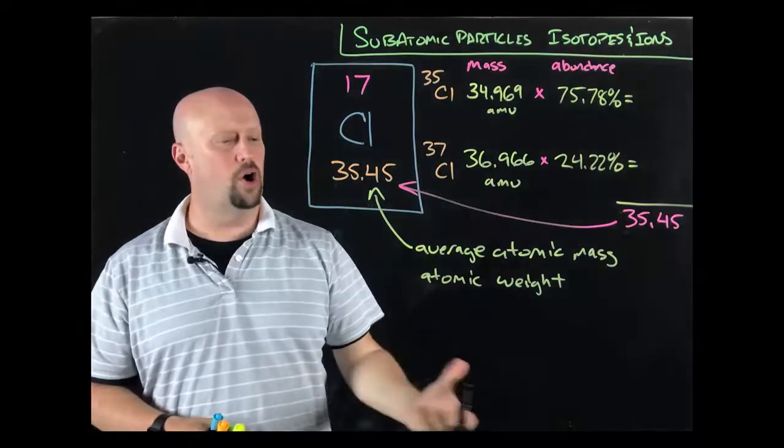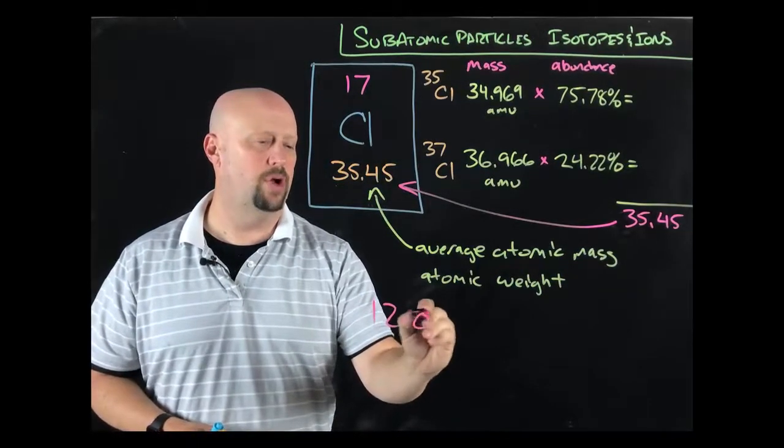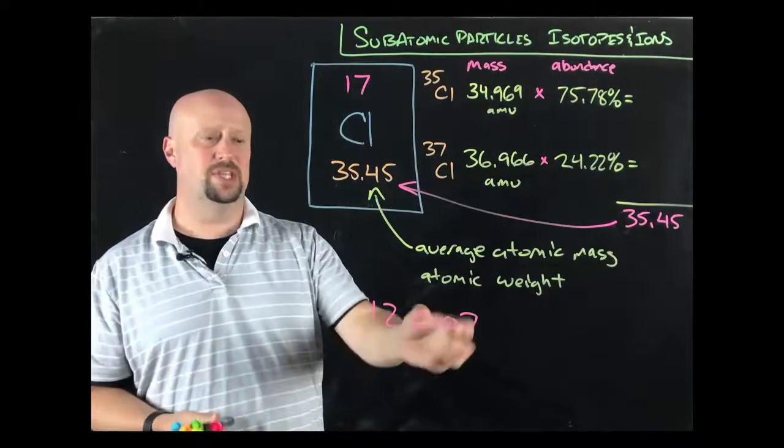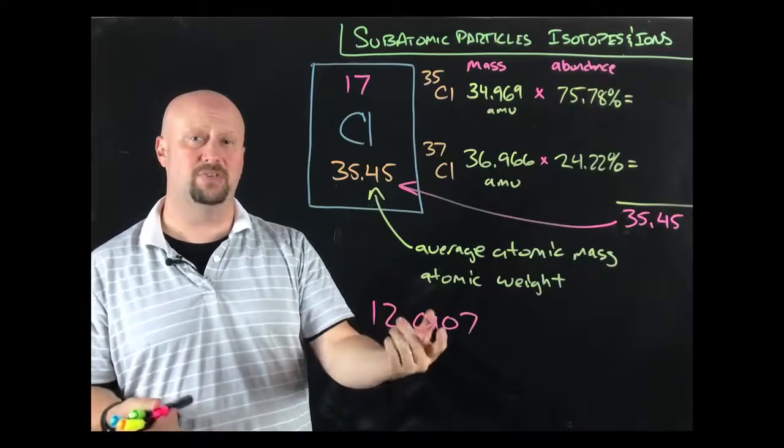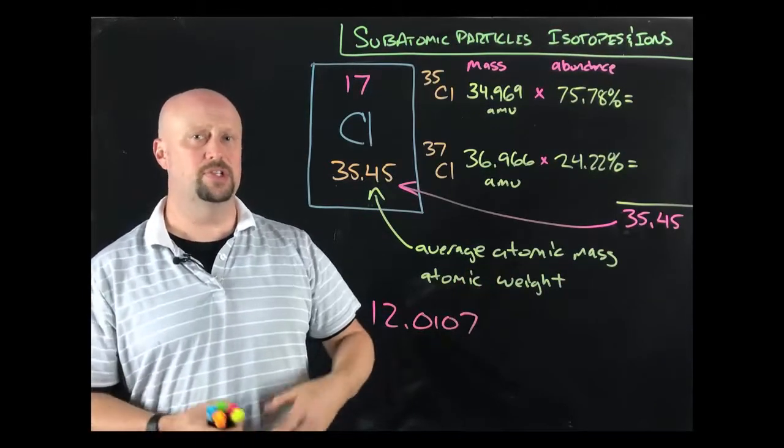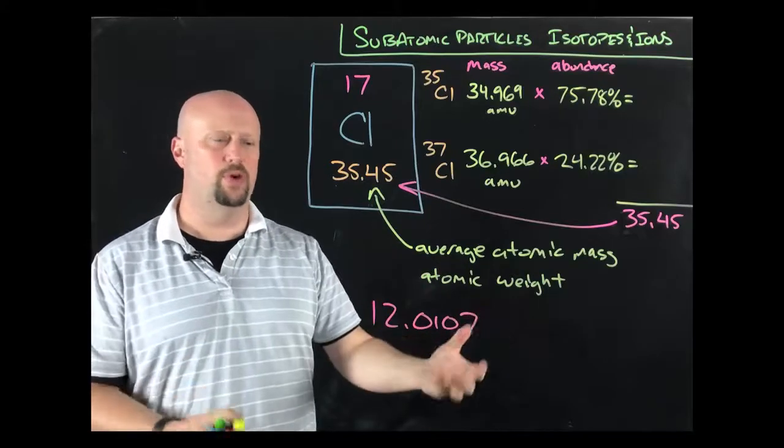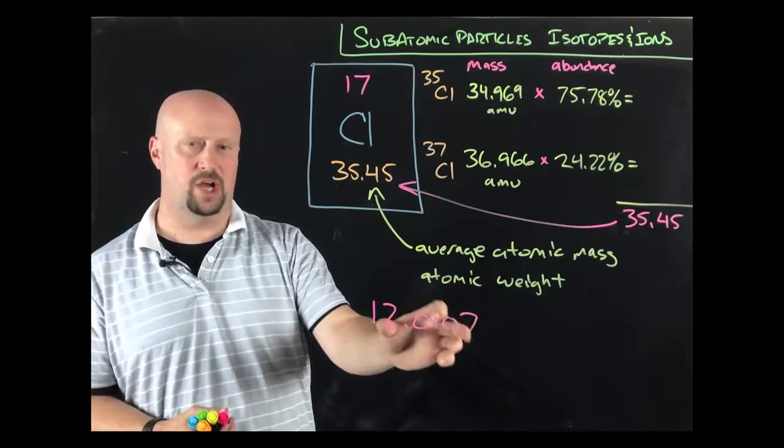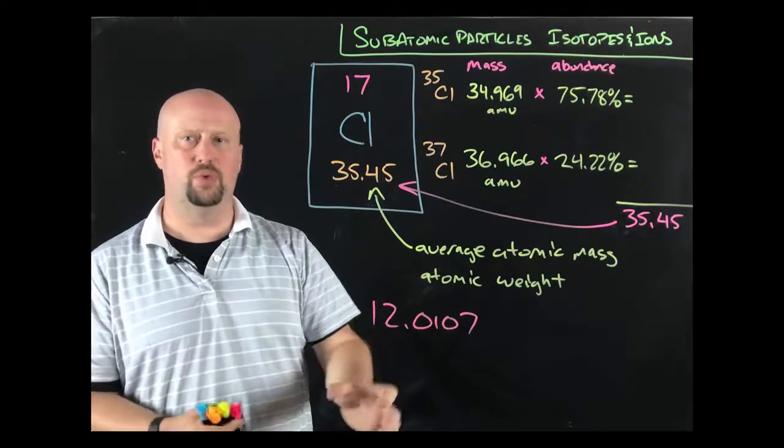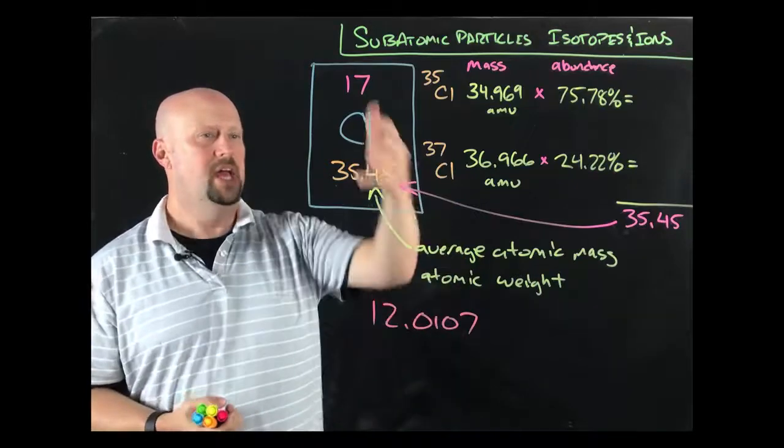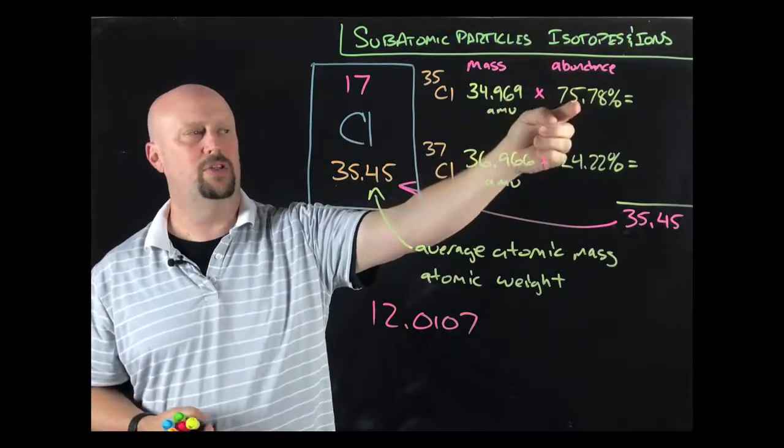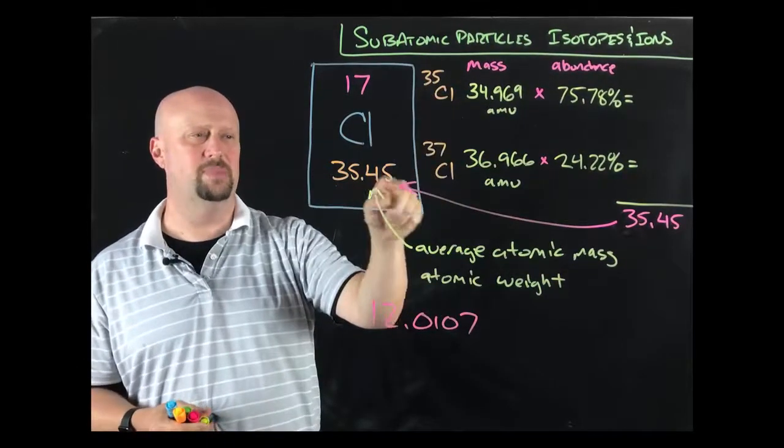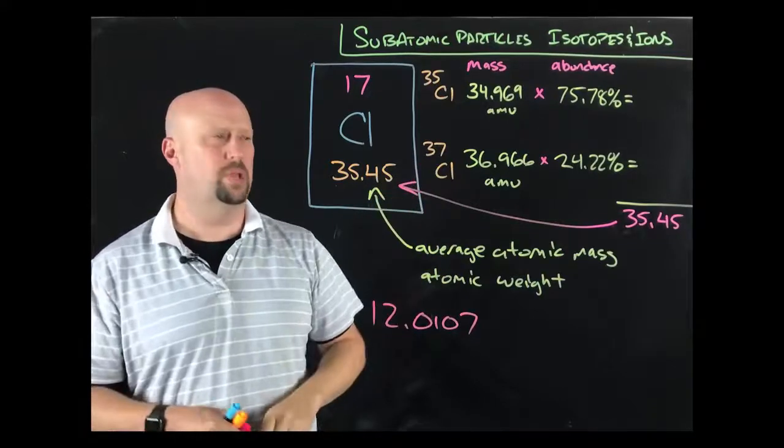So if you remember, carbon had one of 12.0107, if I'm not mistaken, was its average atomic mass. So what that would tell you is that the vast bulk of carbon is the mass of 12, which it is, it's about 99%. And then there's a little carbon 11, carbon 13, carbon 14, very small amounts, but that gives us a mass, an atomic weight that is slightly different than the 12 that is the most common. In the case of chlorine, you see that it's about a three to one ratio between those two isotopes. And so that's going to give us a mass that's closer to the 35, but that that 37 still plays a pretty significant effect.